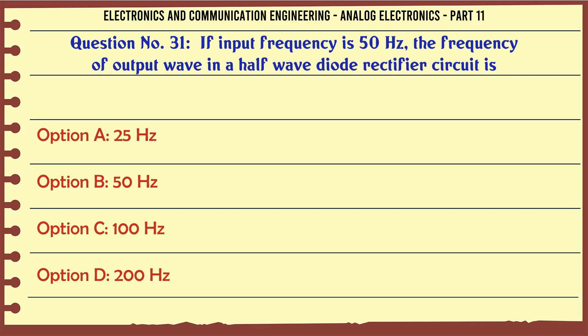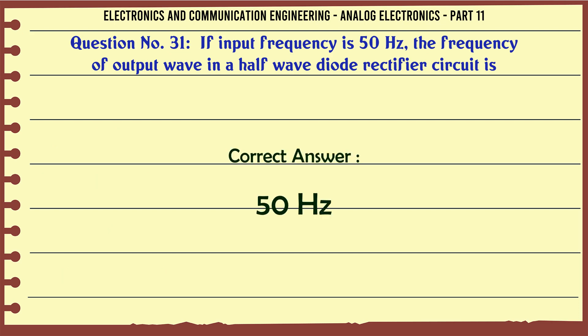If input frequency is 50 Hz, the frequency of output wave in a half-wave diode rectifier circuit is. A. 25 Hz. B. 50 Hz. C. 100 Hz. D. 200 Hz. The correct answer is: 50 Hz.